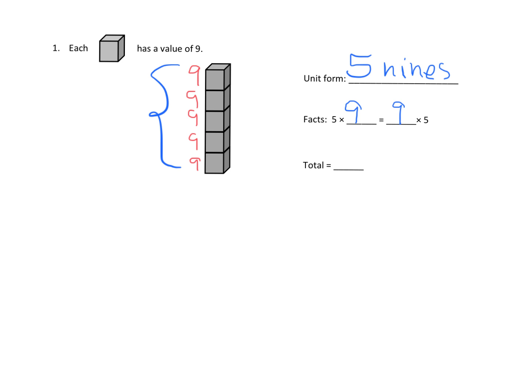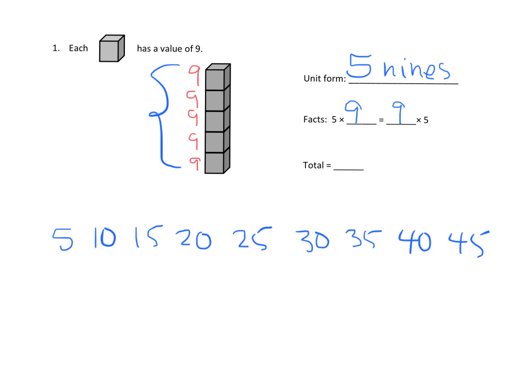Students skip count by fives: 5, 10, 15, 20, 25, 30, 35, 40, 45, holding up a finger each time to track nine counts. So five times nine is 45, which means nine times five is also 45 — that's the commutative property. If they don't know one version, they can do the other and get the same answer.